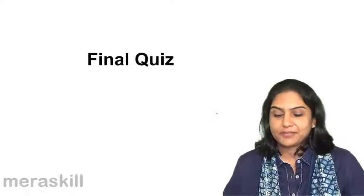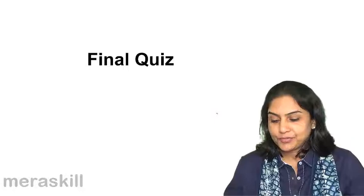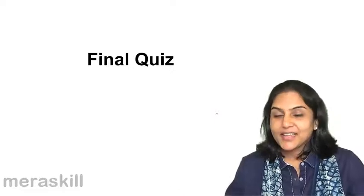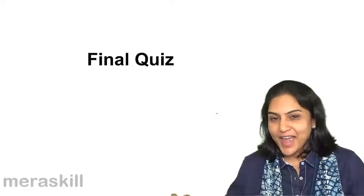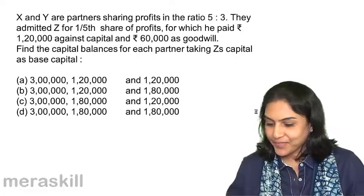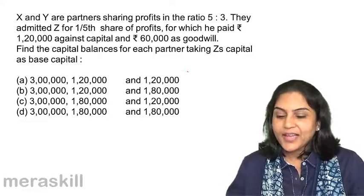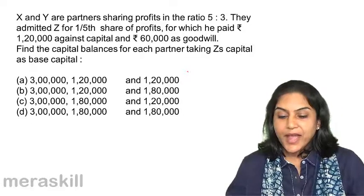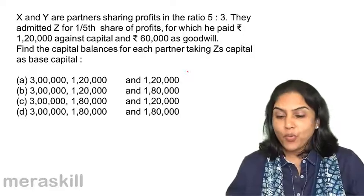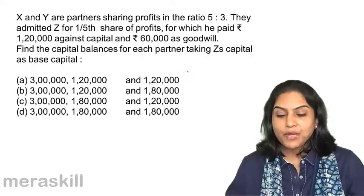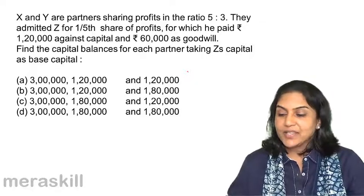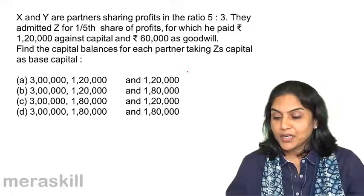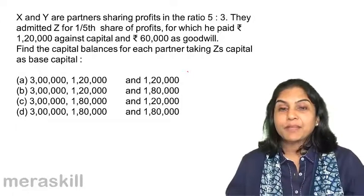One final quiz to test our understanding of all the concepts we have discussed in this session: Admission, Retirement and Debt. X and Y are partners sharing profits in the ratio 5:3. They admitted Z for one-fifth share of profits, for which he paid $1,20,000 against capital and $60,000 as goodwill. Find the capital balances for each partner taking Z's capital as base capital.